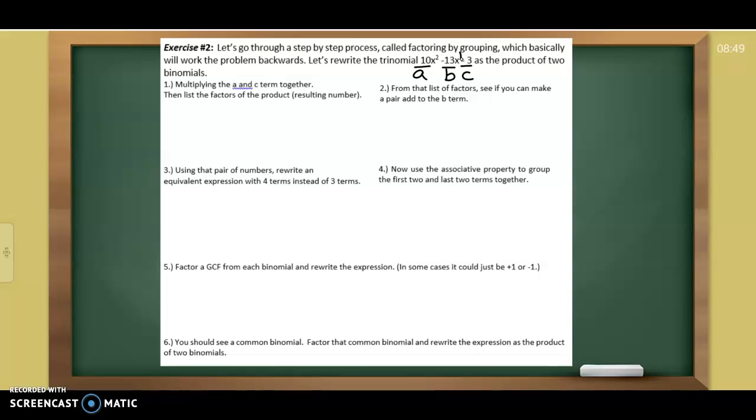What we do is we multiply the a and the c term together. Well, that is going to be 10 times negative 3. And 10 times negative 3 is negative 30. Now, we want to make a list of factors. And we've been doing this quite a bit, so hopefully this is a review. 1 times 30, 2 times 15, 3 times 10, 4 doesn't go in nicely, 5 times 6.